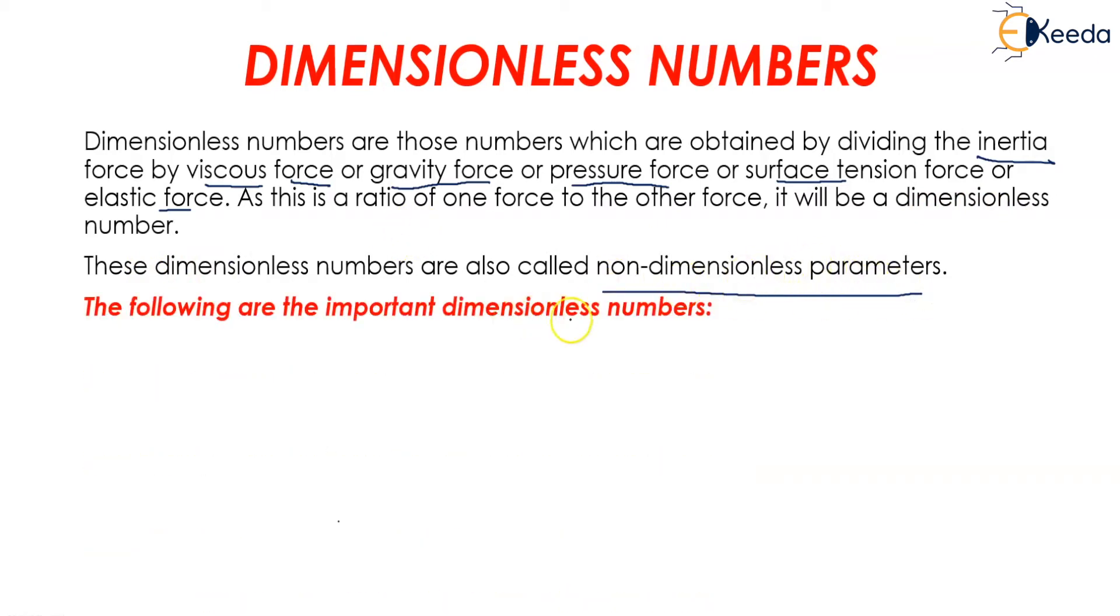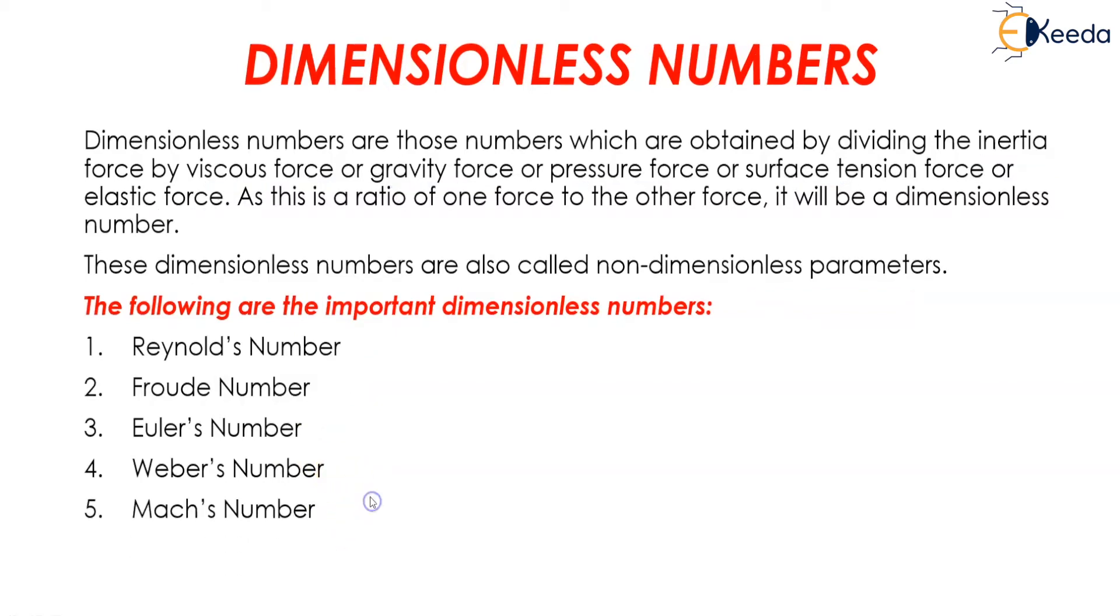The following are the important dimensionless numbers. The first is Reynolds number, second is Froude number, third is Euler number, fourth is Weber number, fifth is Mach number.